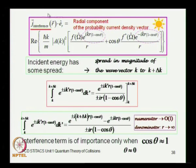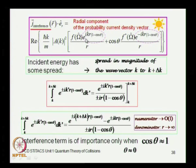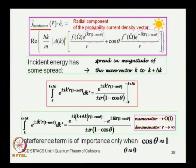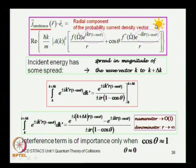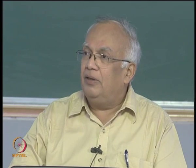This particular relation, which is in a purple rectangular box, I have put an additional symbol — which looks like the sun — just to draw your attention to this result. This is the radial component of the probability current density vector corresponding to the interference term. We will come back to this expression a little later in the discussion.